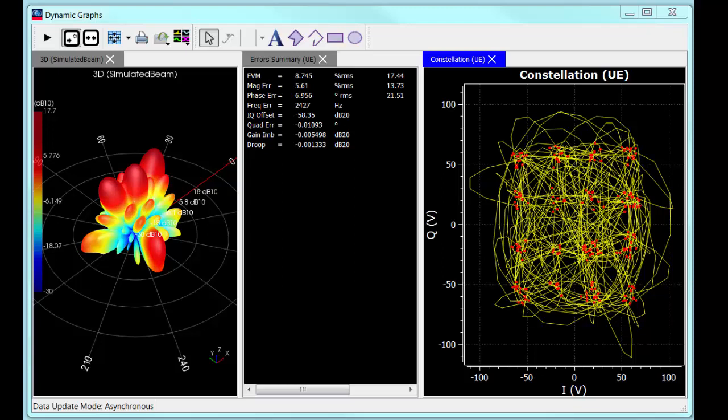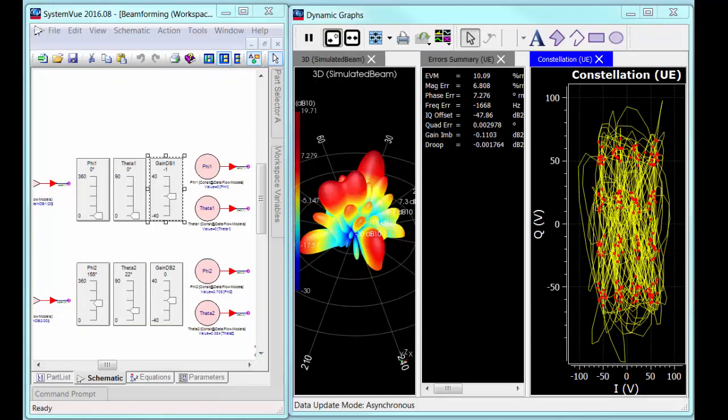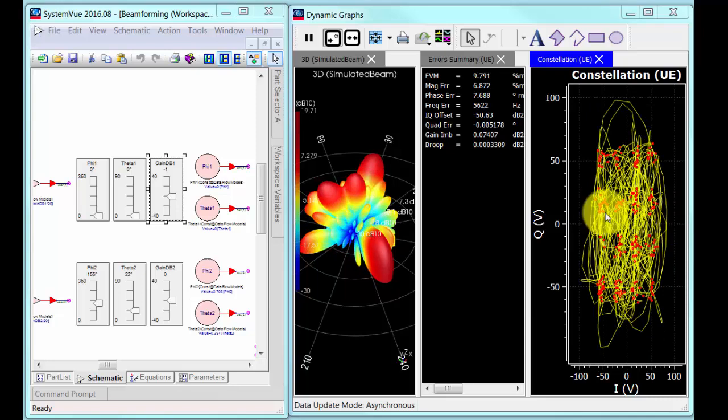Hence, user 1 is receiving not only the desired signal but also an interferer from user 2. At this point, one can fix the problem by increasing signal to interference ratio by raising user 1 power.